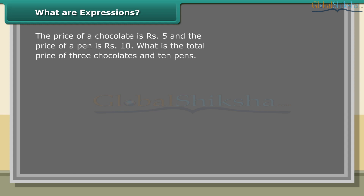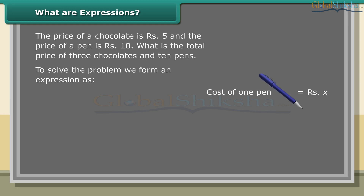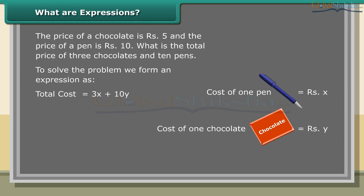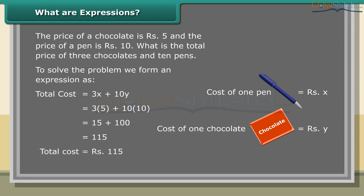The price of a chocolate is rupees 5 and the price of a pen is rupees 10. What is the total price of 3 chocolates and 10 pens? To solve this problem, we form an expression: cost of 1 pen equals rupees x, cost of 1 chocolate equals rupees y, cost of 3 chocolates equals 3y, cost of 10 pens equals 10x. Total cost equals 3x plus 10y, which equals 3 into 5 plus 10 into 10, which equals 15 plus 100, which equals 115 rupees.